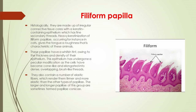Histologically, filiform papillae are made up of irregular connective tissue cores with a keratin-containing epithelium that has fine secondary threads. Heavy keratinization of filiform papillae — occurring for instance in cats — gives the tongue a roughness characteristic of these animals. These papillae have a whitish tint owing to the thickness and density of their epithelium. The epithelium cells have become cone-like and elongated into dense overlapping brush-like threads. They also contain elastic fibers, making them firmer and more elastic than other papillae types.